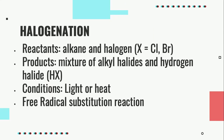Reactions of alkanes. Alkanes undergo halogenation reaction. Halogenation is the replacement of one or more hydrogen atoms in an organic compound by a halogen. Alkane reacts with halogen to produce a mixture of alkyl halides and hydrogen halide. This reaction is possible in the presence of light or heat.